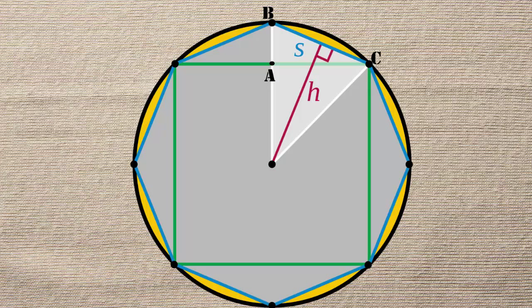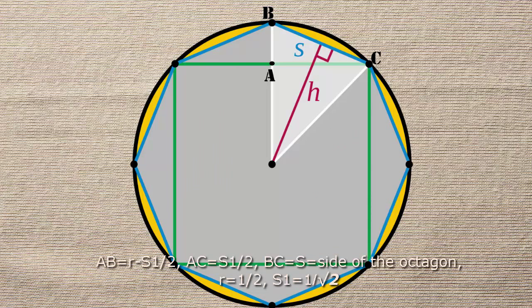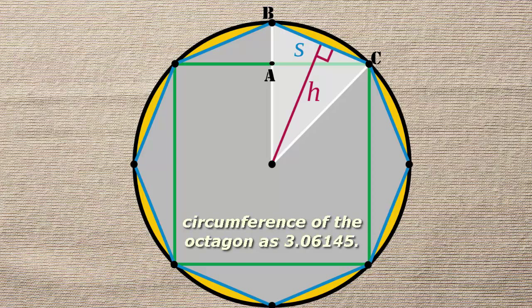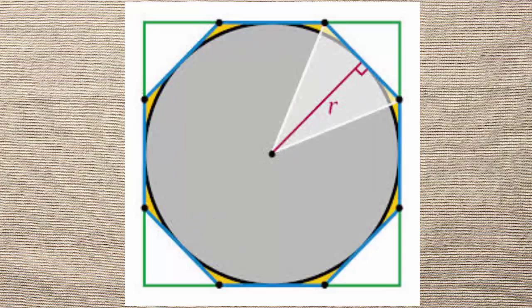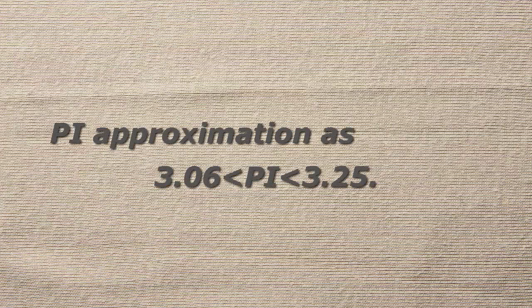It is a rough estimation, but if we choose octagons instead of squares, we get more accuracy. Let us take only the inner square and the circle from our figure and inscribe an octagon in it. Using the Pythagorean theorem, ab² + ac² = bc², where ab = r − s1/2, ac = s1/2, and bc = s (side of octagon), with r = 1/2 and s1 = 1/√2. Substituting all these values, we get the circumference of the inner octagon as 3.06145. For the outer octagon, using similar techniques, the perimeter is roughly 3.25. So using octagons we get the approximation: 3.06 < π < 3.25.